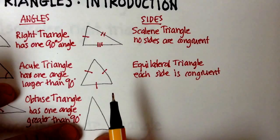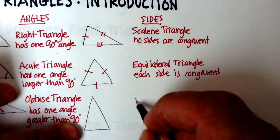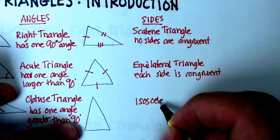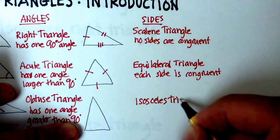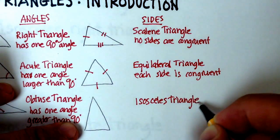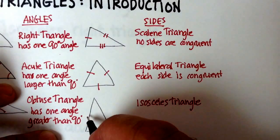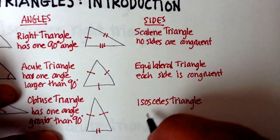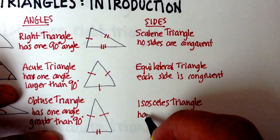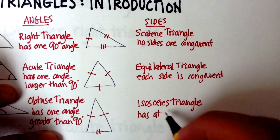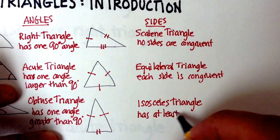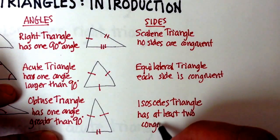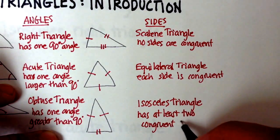And finally, this last triangle is called an isosceles triangle. An isosceles triangle has two sides that are equal and a third that is not. So another way to say that is it has at least two congruent sides.